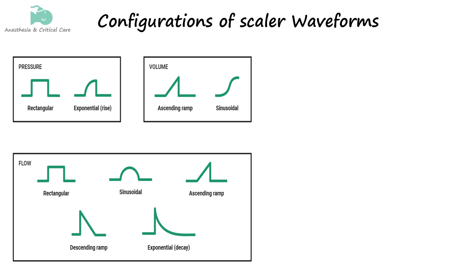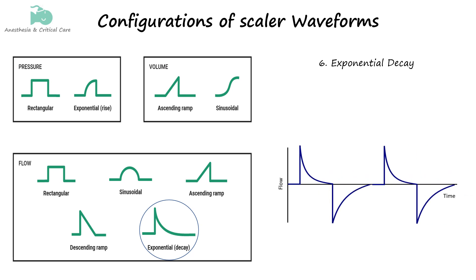Finally, the decaying exponential waveform shows the opposite pattern to the exponential rise. It begins with a sharp initial value that quickly decreases, following an exponential decay. This type of waveform is typically seen when the breath starts at a high level and then decreases rapidly, tapering off as the breath completes.